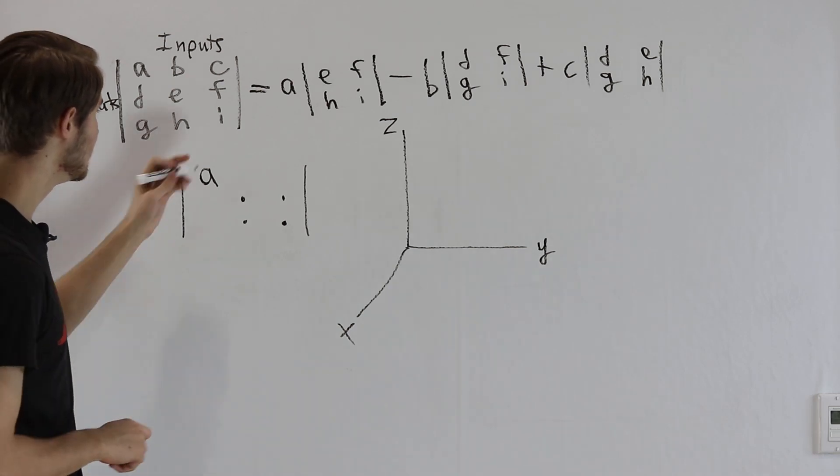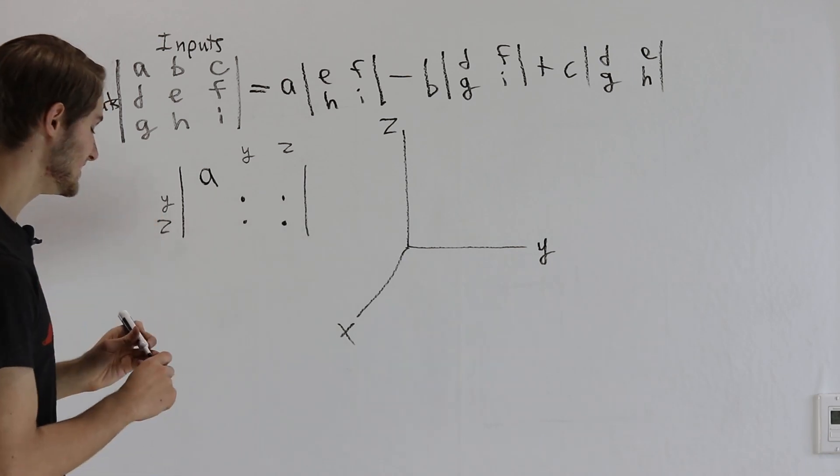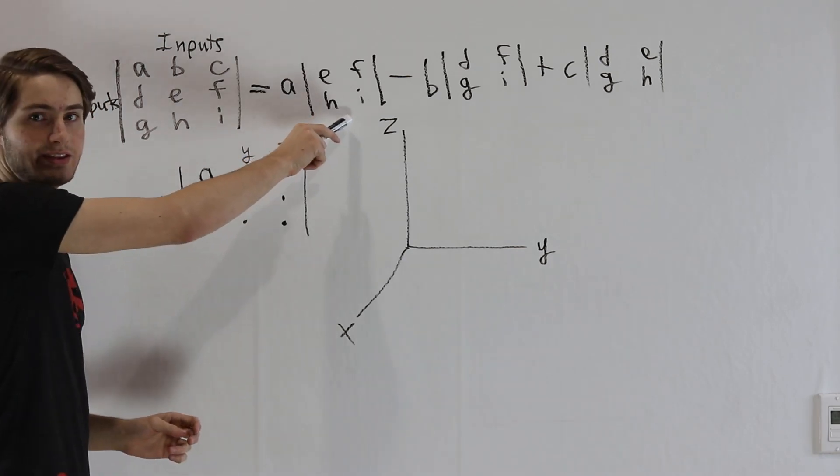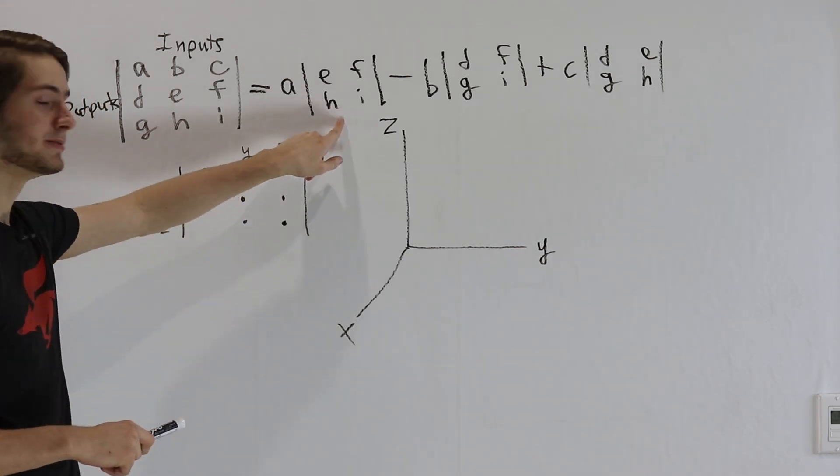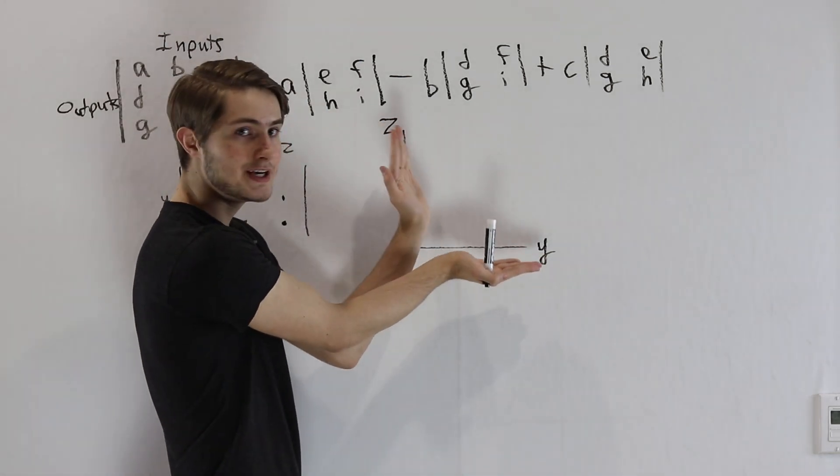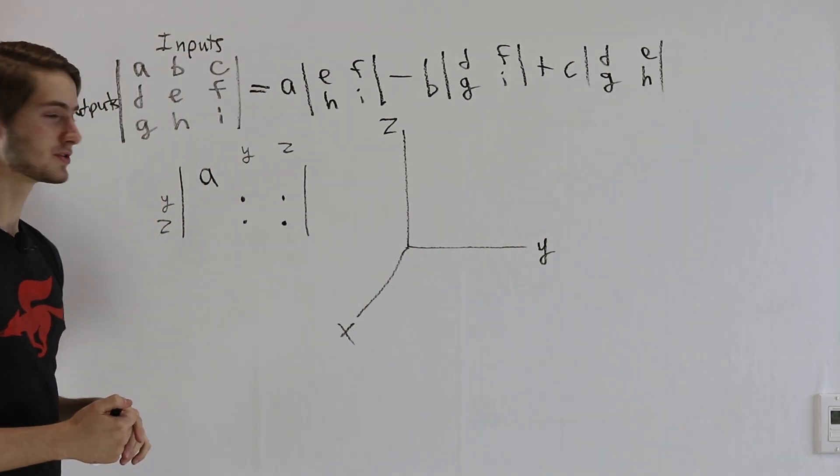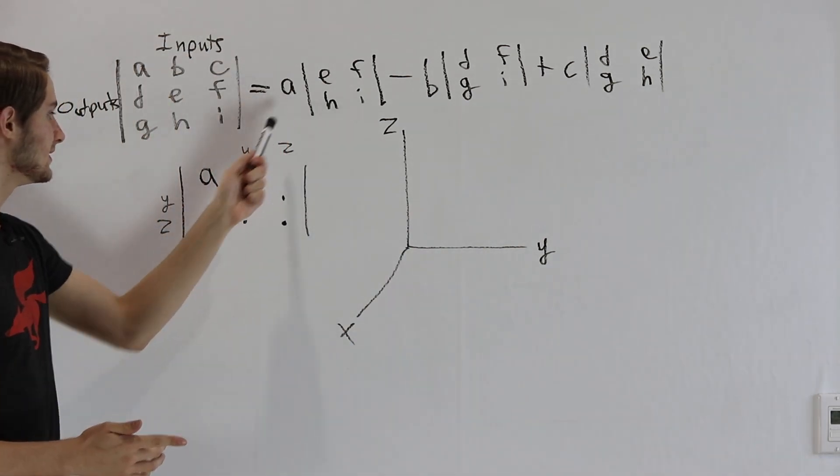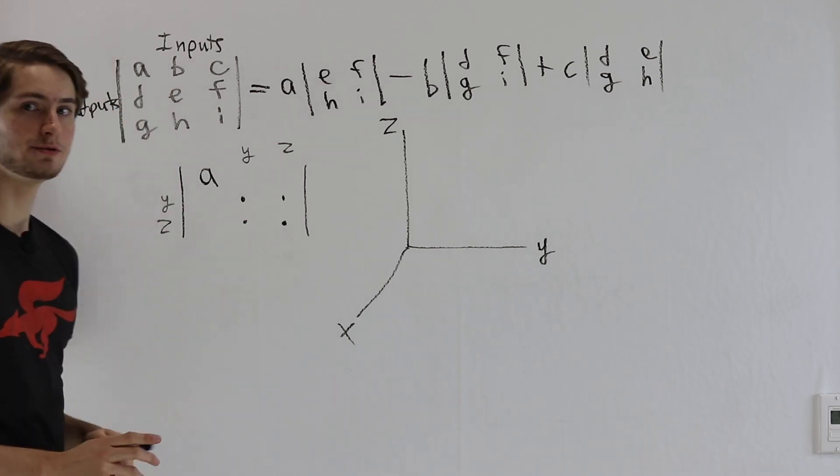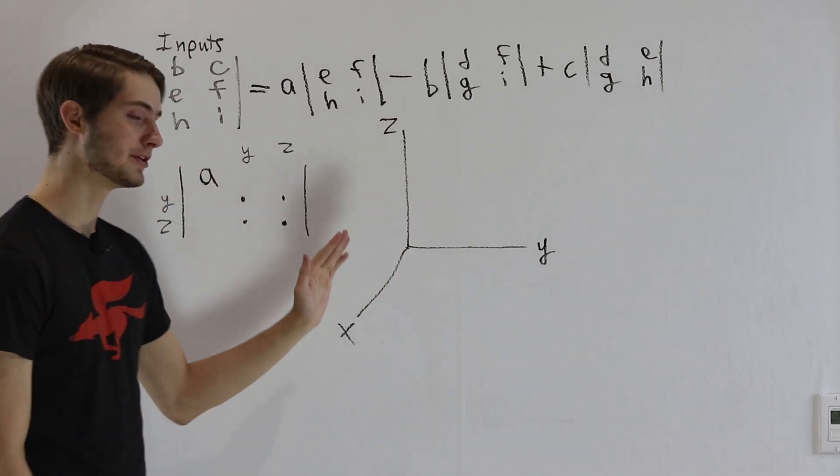But what's happening here is the y and z inputs to the y and z outputs are in this matrix. So this determinant is talking about how much does the y, z plane get scaled up when we do this matrix. And the A is the x input to the x output, meaning how much does the x axis get scaled parallel to itself.